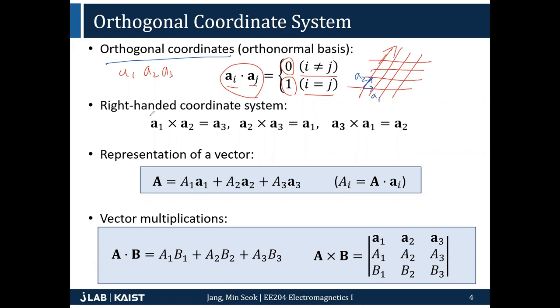Another thing we want to also assume is right-handedness. When we assign A1, A2, A3, we always take this option - A1 cross A2 becomes A3, A2 cross A3 becomes A1, A3 cross A1 becomes A2. This is kind of cyclic order. This is called a right-handed coordinate system, and we will follow this convention. These are just constraints to make our discussion simpler.